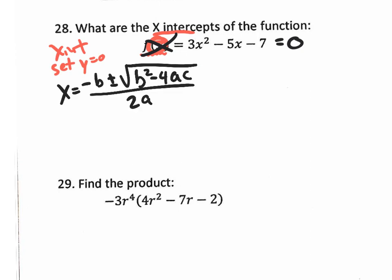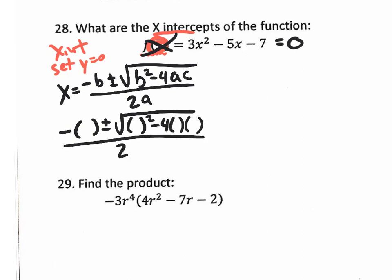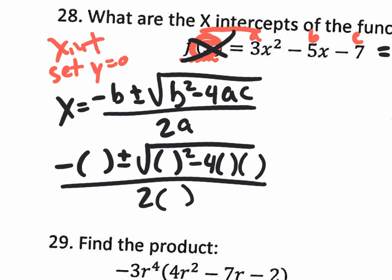Let's go with the quadratic formula. The best way to use the quadratic formula is to replace those letters with parentheses: negative B plus or minus the square root of B squared minus 4 times A times C, all divided by 2 times A. Identify your A value of 3, your B value of negative 5, and your C value of negative 7, and simply plug them in. The negative 5 is B — put it in both positions. The A value is 3. The C value is negative 7.